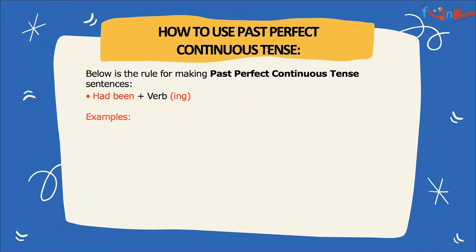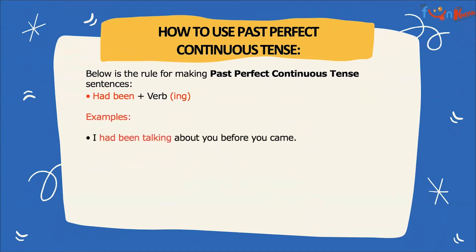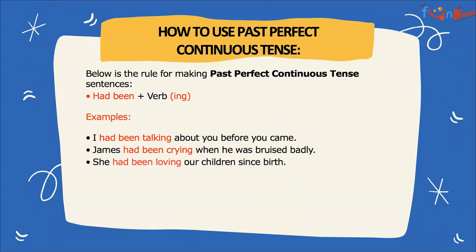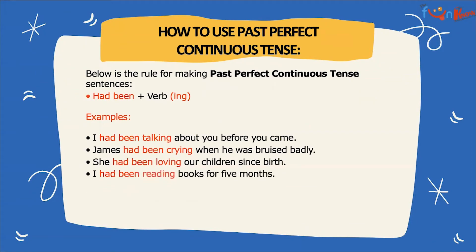Let's look at some more examples. I had been talking about you before you came. James had been crying when he was bruised badly. She had been loving our children since birth. I had been reading books for five months.